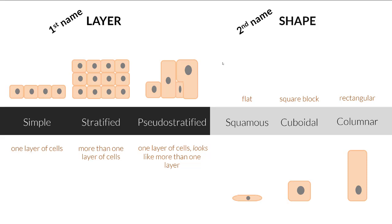How epithelial tissue is named is like a first name and a second name. The first name is about the layering. It could be one layer, known as simple. It could be more than one layer — its first name would be stratified. And there's one category that looks like more than one layer but actually is one layer, so it's pseudo-stratified. One of these three is going to be the first name.